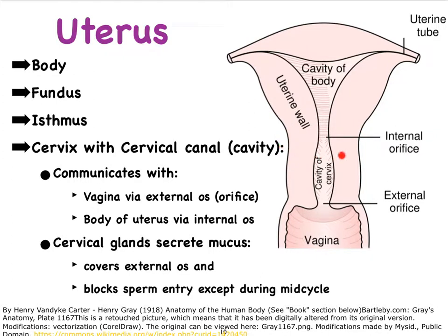Where the uterus wall narrows right about here, we refer to that as the isthmus. The connection between the body of the uterus and the vagina we refer to as the cervix. This is typically what is sampled when females go in to see the gynecologist and have a pap smear done. So cells are collected from this cervix area. The cervix has two orifices: the external orifice or external os, versus the internal orifice or internal os.